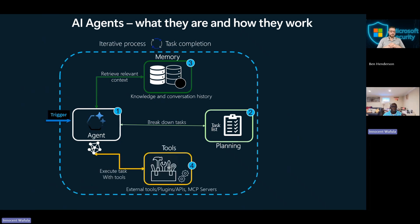Once it goes through that process and gets context from short-term or long-term memory, it autonomously decides what is the best tool to perform this task. So it goes into its toolbox, selects the tool it requires, and then executes that tool. That tool could be making an API call, invoking a plugin, or more recently tapping into an MCP server. And throughout all this process, you'll see it's an iterative process.